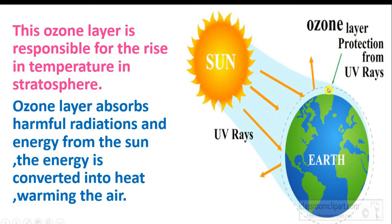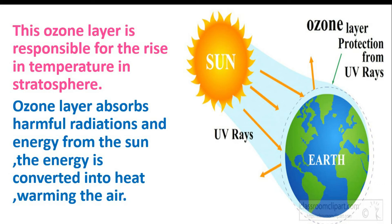In this diagram, you can see harmful radiations coming from the Sun, but around the Earth there is the ozone layer, which protects the Earth from those harmful radiations. These UV radiations cannot reach the ground due to the ozone layer. So the ozone layer both raises stratospheric temperature and protects the Earth from harmful ultraviolet radiations.